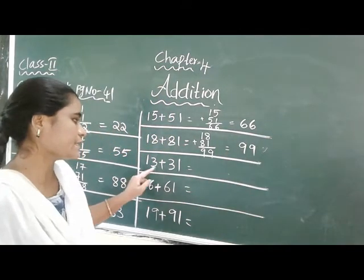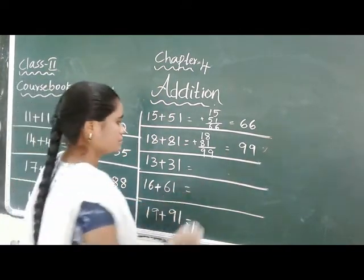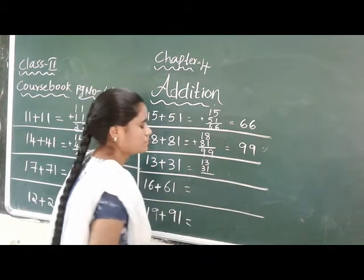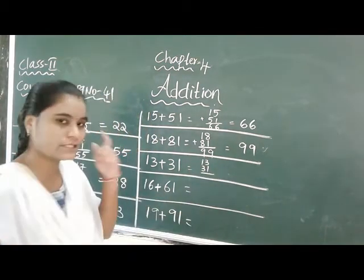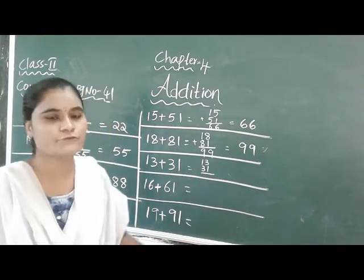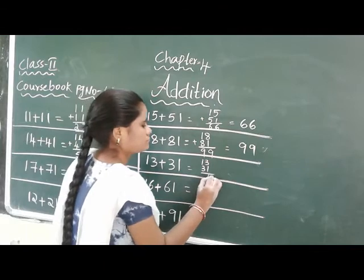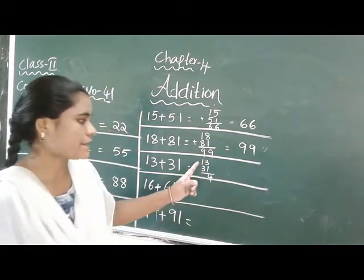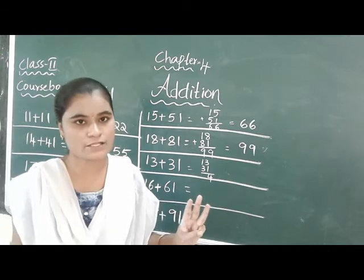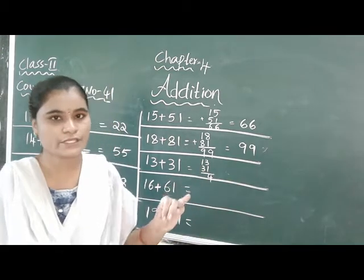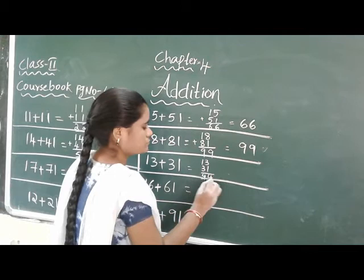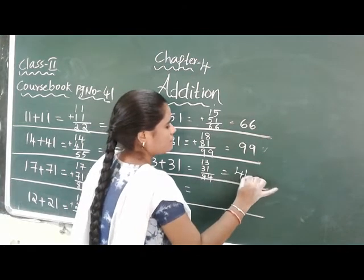Next: 30 plus 31. 3 in the mind, take 1 finger, 3 after 4. Then 1 in the mind, take 3 fingers, 1 after 2, 3, 4. Answer is 44.